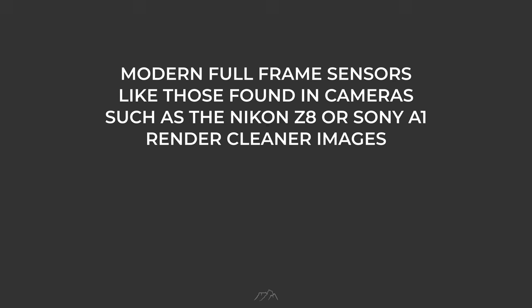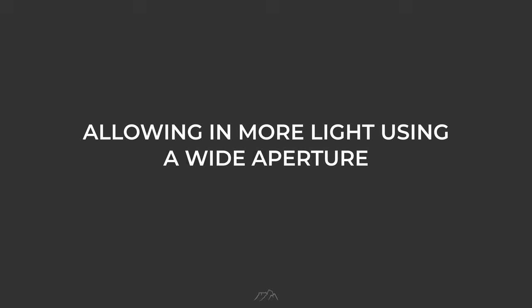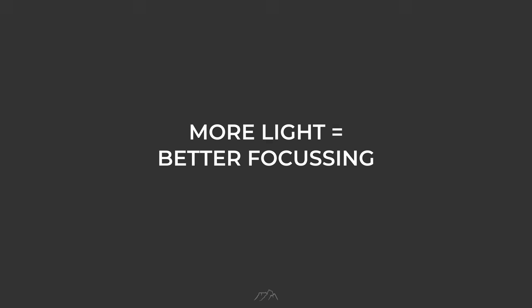Certain types of camera equipment can make a significant difference to overall image quality. Although I don't like advising photographers to buy new gear, it's worth mentioning here if you already own such equipment. Modern full-frame sensors, like those found in cameras such as the Nikon Z8 or Sony A1, render cleaner images under low light and high ISO conditions than smaller sensor cameras like APS-C or Micro Four Thirds. Also, lenses with larger apertures such as f/2.8 allow in more light than a lens with a maximum aperture of f/6.3 — allowing in more light with a wide aperture will result in cleaner images.